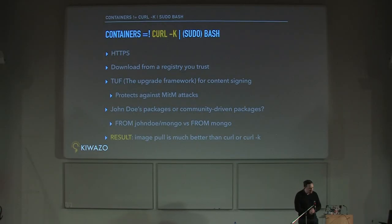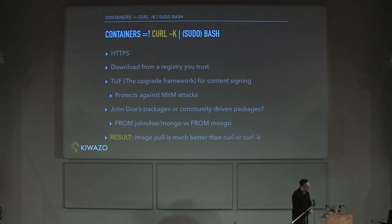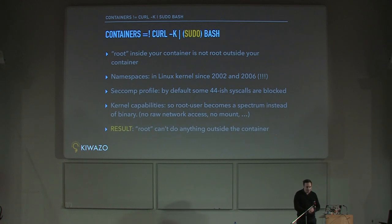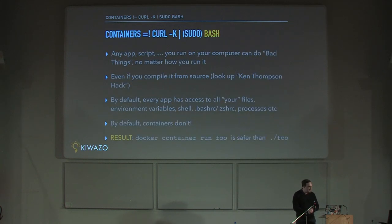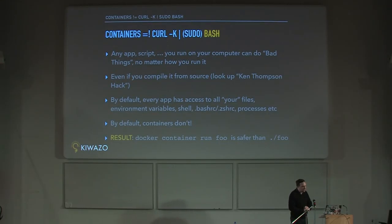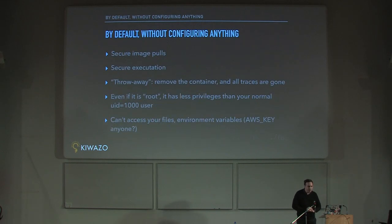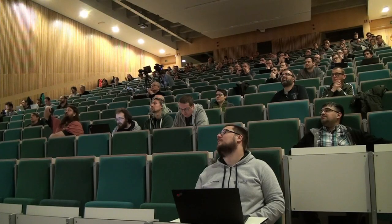Let's have a look at the curl -k part. curl -k downloads something from the internet and disables all HTTPS security checks. By default, if you pull a container, the HTTPS certificate is checked — it is coming from a known source and it is verified. Now the second part: sudo bash. Most containers run something called root inside that container, yet they are something completely different. A root inside your container does not equal root outside your container. If you run something in bash it has access to all your files, all your environment privileges, everything. A container does not do that by default.